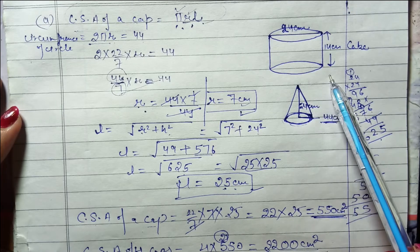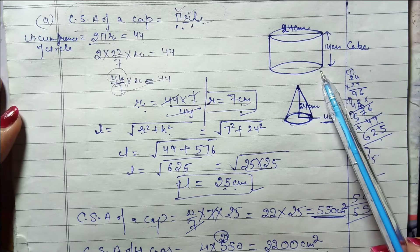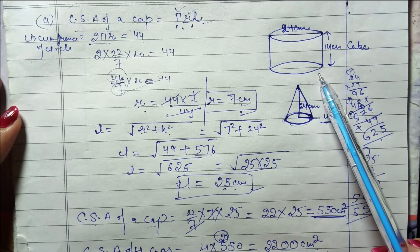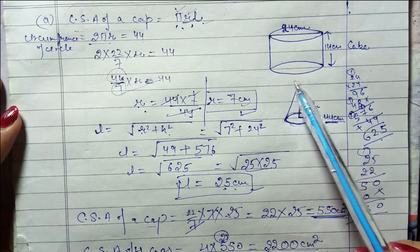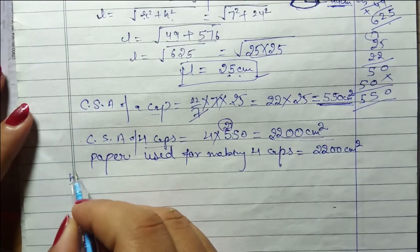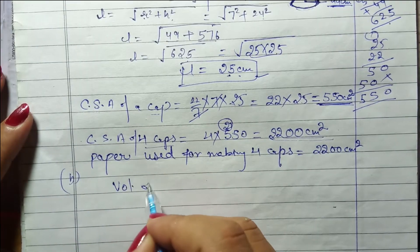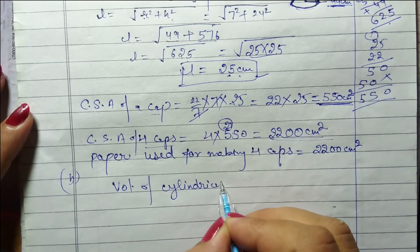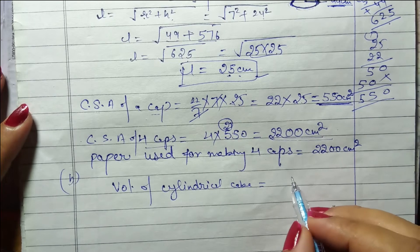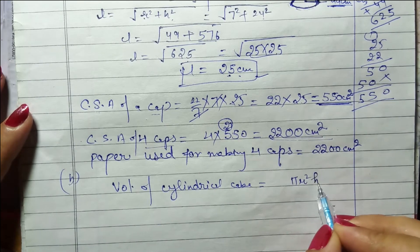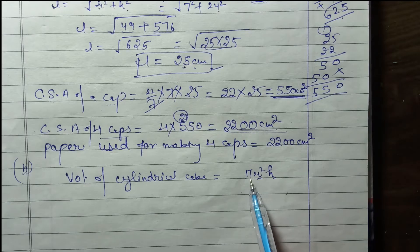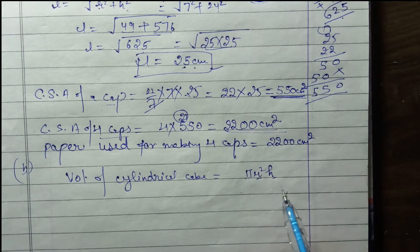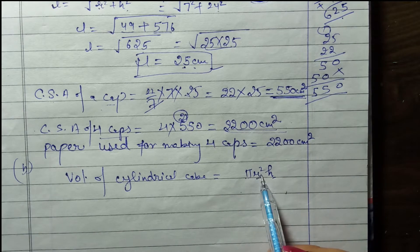Is cake ka humein volume find out karna hai. Cake cylindrical shape ki hai, toh humein volume of cylinder find out karna hai. B part ke liye likhenge: volume of cylindrical cake. Volume of cylinder ka formula kya hota hai? πr²h, where r is the radius and h is the height. Pi ki value 22/7.